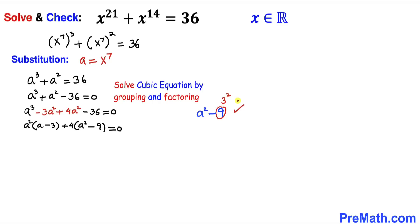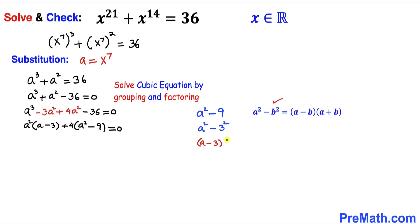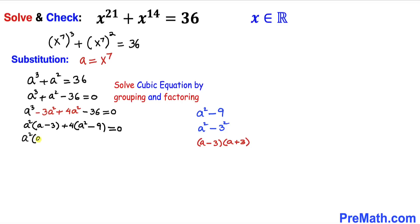We end up with the factor (a² - 9) = 0. Now let's focus on a² - 9: 9 can be written as 3². Recalling the difference of two squares identity, a² - 9 = (a - 3)(a + 3). So I replace a² - 9 with these two factors, giving a² · (a - 3) + 4 · (a - 3)(a + 3) = 0.